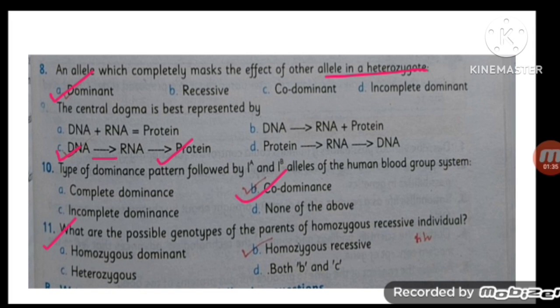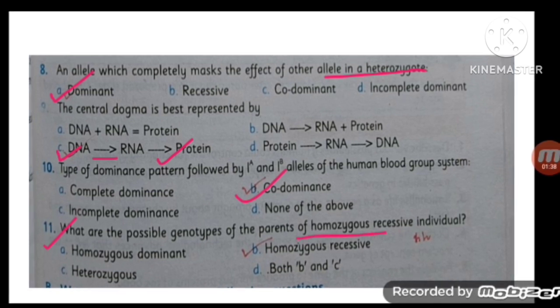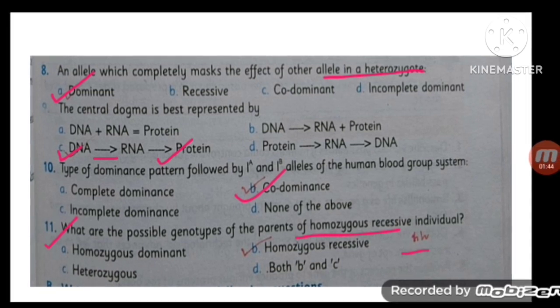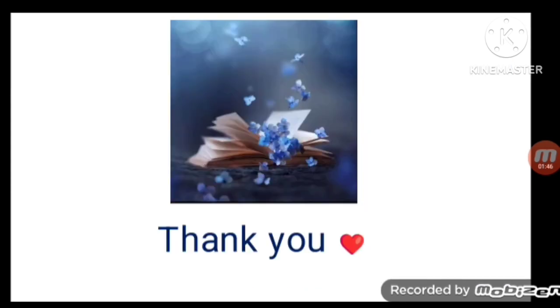MCQ number 11: what are the possible genotypes of the parents of a homozygous recessive individual? If the individual is homozygous recessive, then his parents should be heterozygous.